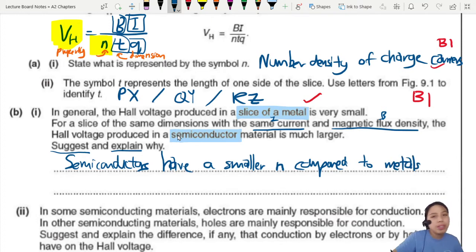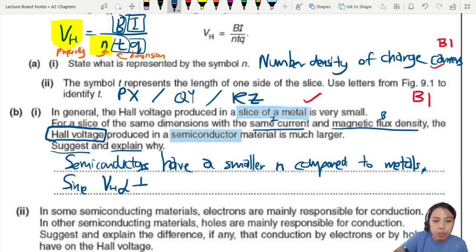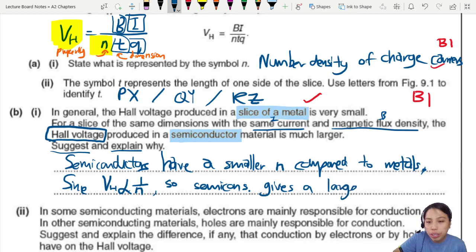So the key players here is the variation between the two slices, N and VH. So let's write it out. Semiconductors have a smaller N, smaller number density of charge carriers compared to metals. If you're curious to know why, go watch the video on semiconductors. Or if the chemistry is too much for me, then you just kind of memorize it as a fact. Semiconductors, smaller number density compared to metals like copper or other things.